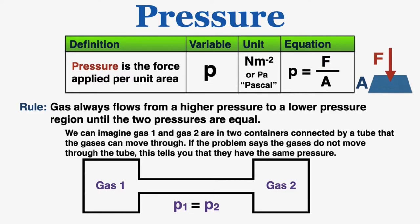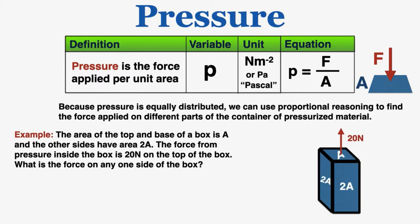If the problem says the gases do not move through the tube, this tells you that they have the same pressure as each other. You can assume, unless otherwise stated, that all regions of a gas always have the exact same pressure as all other regions of a gas. Because pressure is equally distributed, we can use proportional reasoning to find the force applied on different parts of the container of pressurized material.